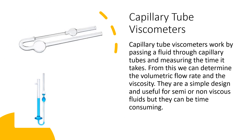The first one we're going to look at is the capillary tube viscometer. Capillary tube viscometers work by passing a fluid through capillary tubes and measuring the time it takes to do this. From this, we can determine the volumetric flow rate and the viscosity.